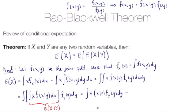By the law of the unconscious statistician, we can think of E[X|Y] as some function g(Y), and this integral turns into the expectation of g(Y). But g(Y) itself is an expectation — it's E[X|Y]. And so that proves the theorem. We started with the left-hand side, the expectation of X, did a bit of calculus and probability theory using the law of the unconscious statistician, and ended up with the right-hand side: the expectation of the expectation of X given Y.